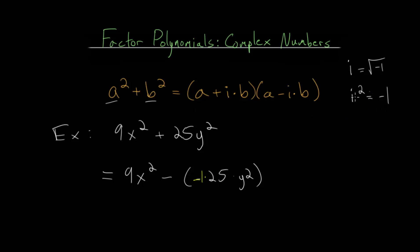And we know negative 1 is really i squared. So let's substitute i squared into this, so that we get 9x squared minus i squared times 25 times y squared.